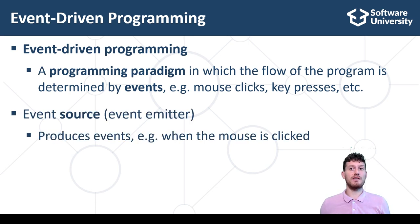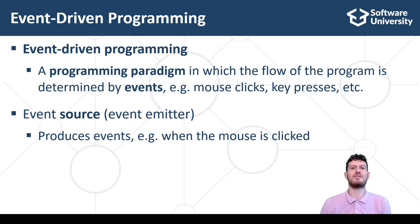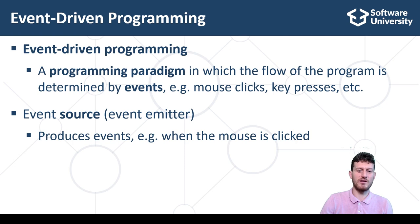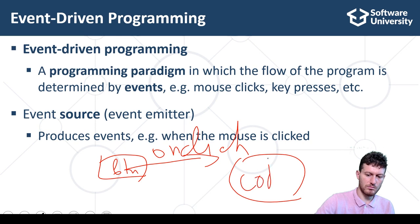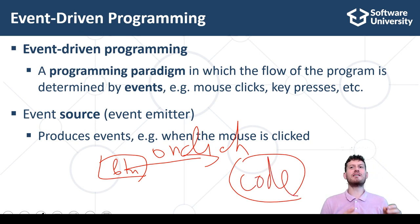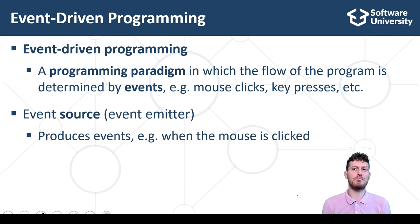An event source, or event emitter, is a software component that produces events. For example, an internal component in the software framework may track the mouse and emit an event when the mouse is clicked. A typical example of an event source is the button component which defines the onclick event. Developers can also write their own components, such as an email sender, and emit events in certain situations — for example, when a successful connection to the email server is established or when the email was rejected by the server.